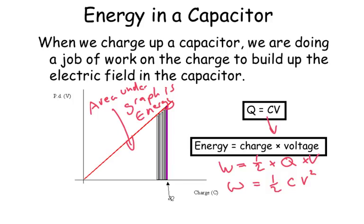The energy stored in a capacitor. When we charge up a capacitor, we are doing a job of work on the charge to build up the electric field in the capacitor. So as we increase the charge, the potential difference also increases. And the equation energy is equal to charge times voltage. Well here, the area under the graph is going to equal the energy stored on our capacitor.